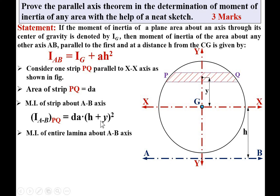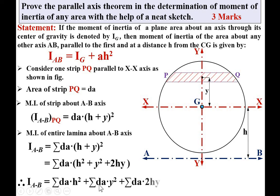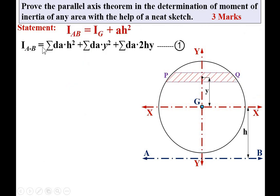The moment of inertia of the entire lamina about the AB axis is the algebraic summation of this expression. So I_AB = Σ dA·(h + y)². Opening this bracket: Σ dA·(h² + y² + 2hy), which gives I_AB = Σ dA·h² + Σ dA·y² + Σ dA·2hy. Let's call this Equation 1.